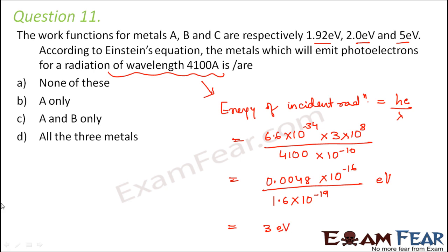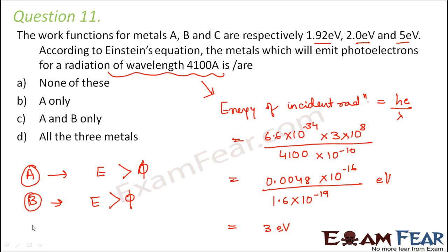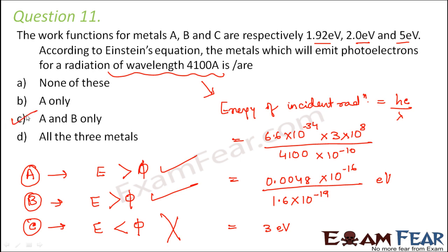Now let us check each metal. For metal A, the energy of the incident radiation (3 eV) is more than the work function (1.92 eV). For metal B, the energy of 3 eV is again more than the work function of 2 eV. For metal C, the energy is less than the work function of 5 eV. So photoelectric emission will take place for A and B only.